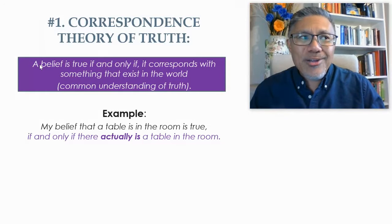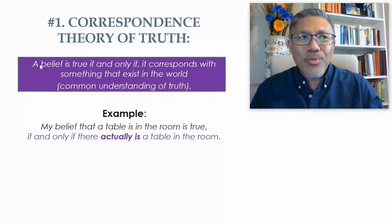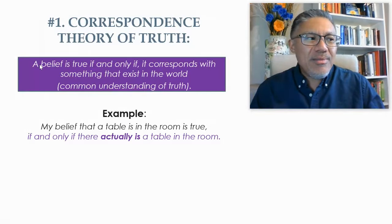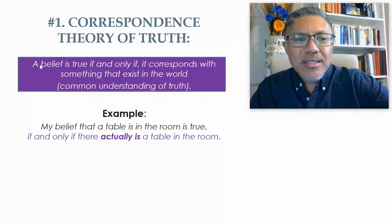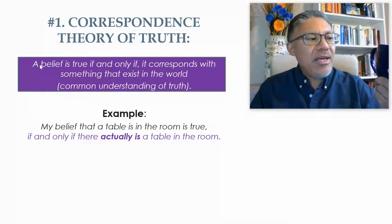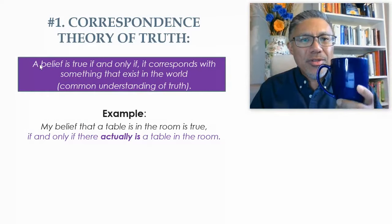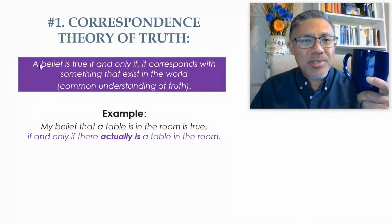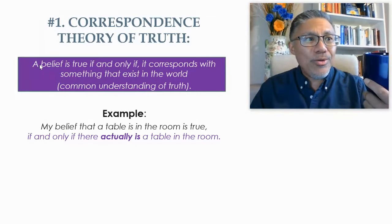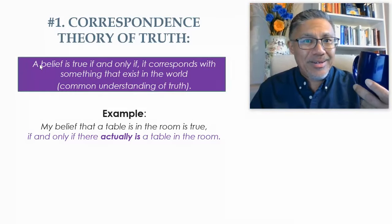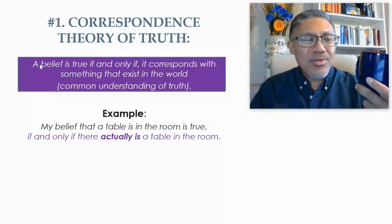So if we can't know the actual nature of reality — like whether there are actual tables in the room — what can truth mean? How can we define truth if we can't say the truth of whether a cup is here depends on whether the cup is actually here? What else could truth mean?